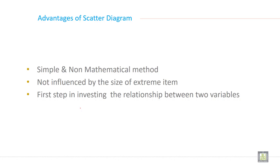Now what are the advantages of a scatter plot? A scatter plot is a simple and non-mathematical method. Anybody can understand the relationship between two or more than two variables. It is not influenced by the size of extreme item. A scatter plot never be influenced by the size of extreme item. And it is the first step in investigating the relationship between two variables.